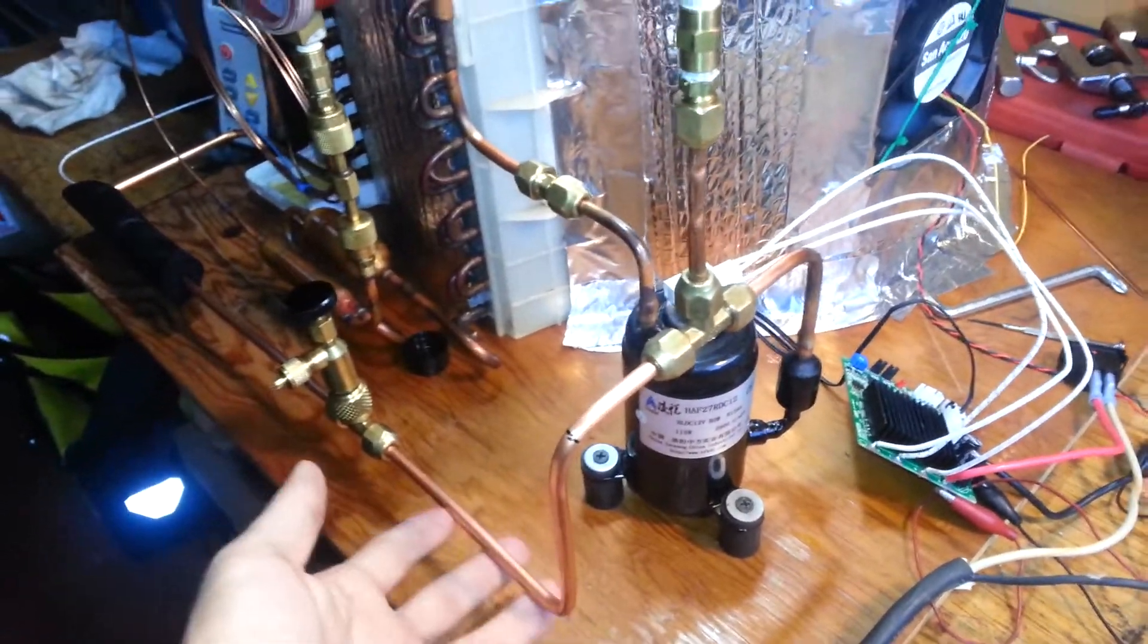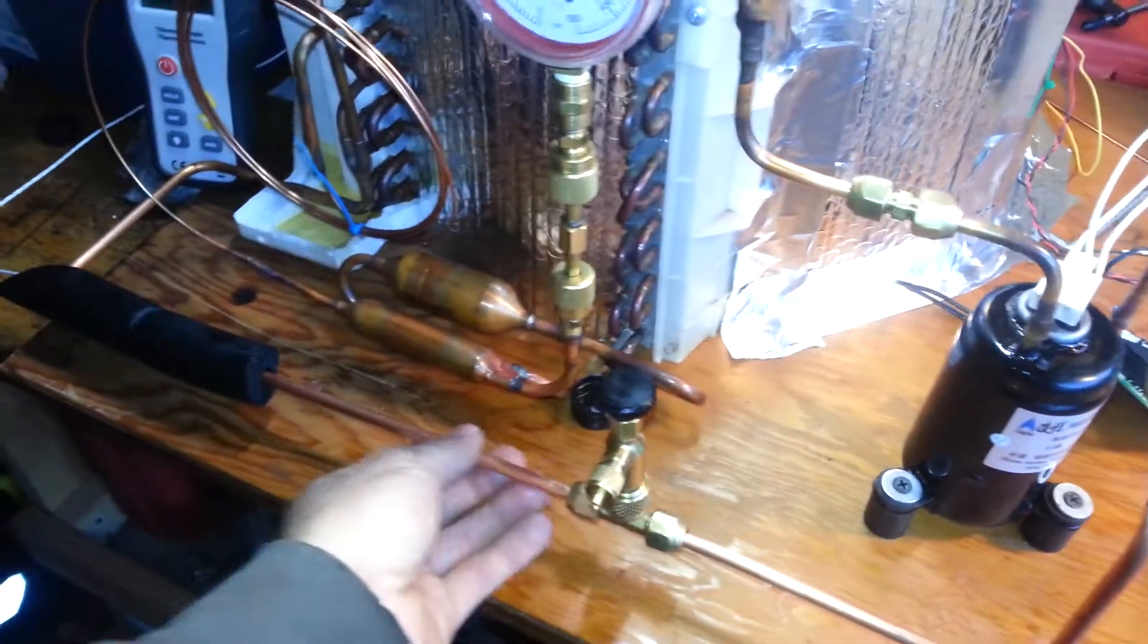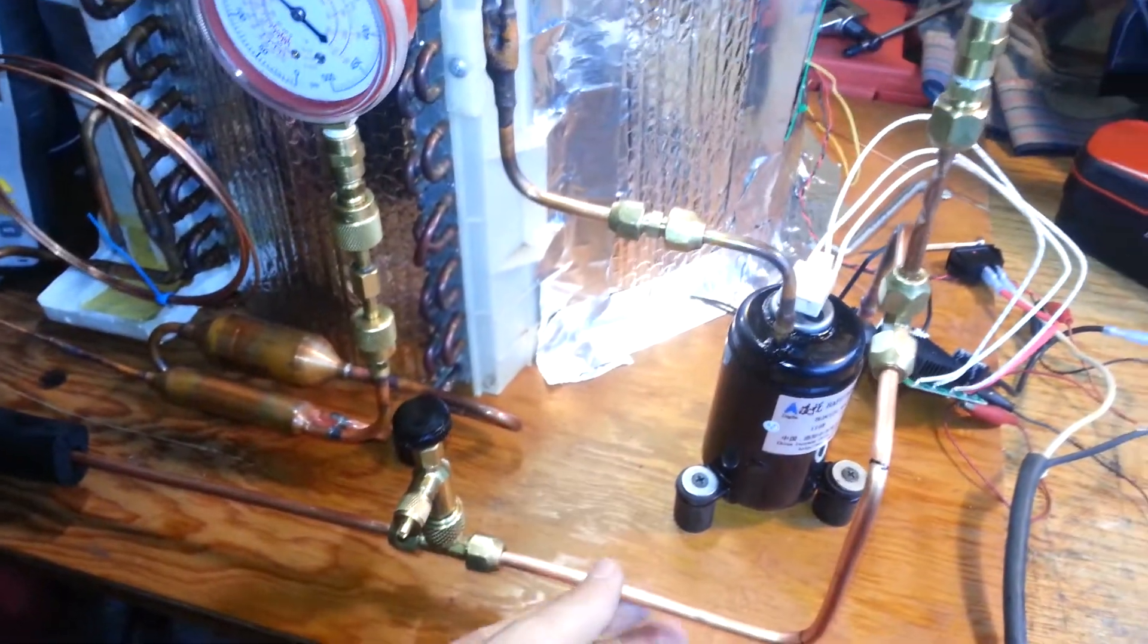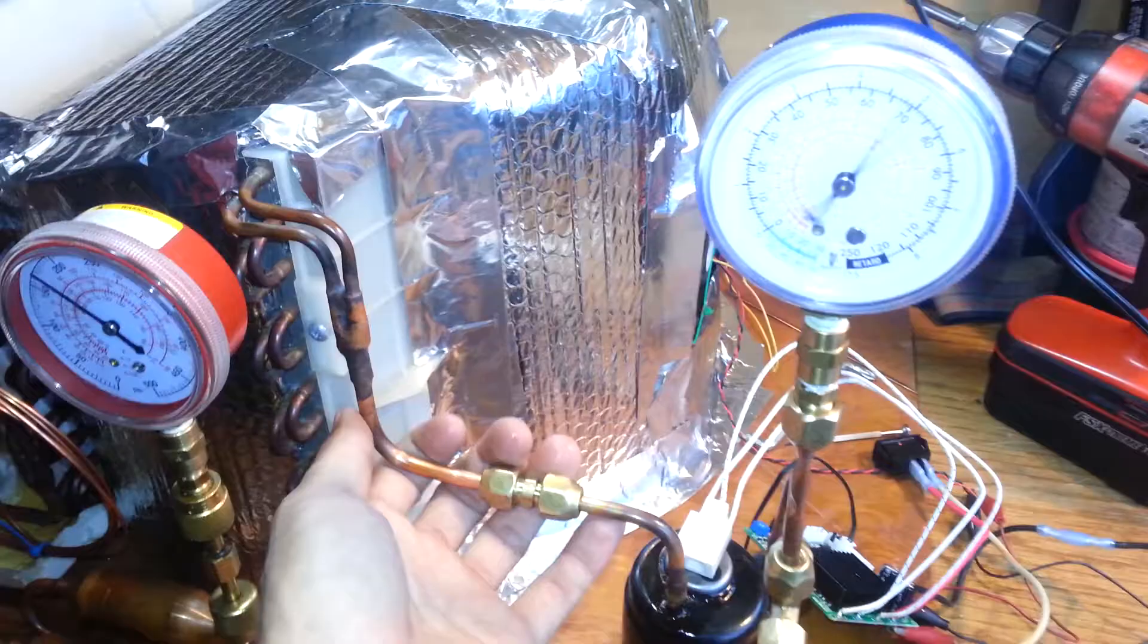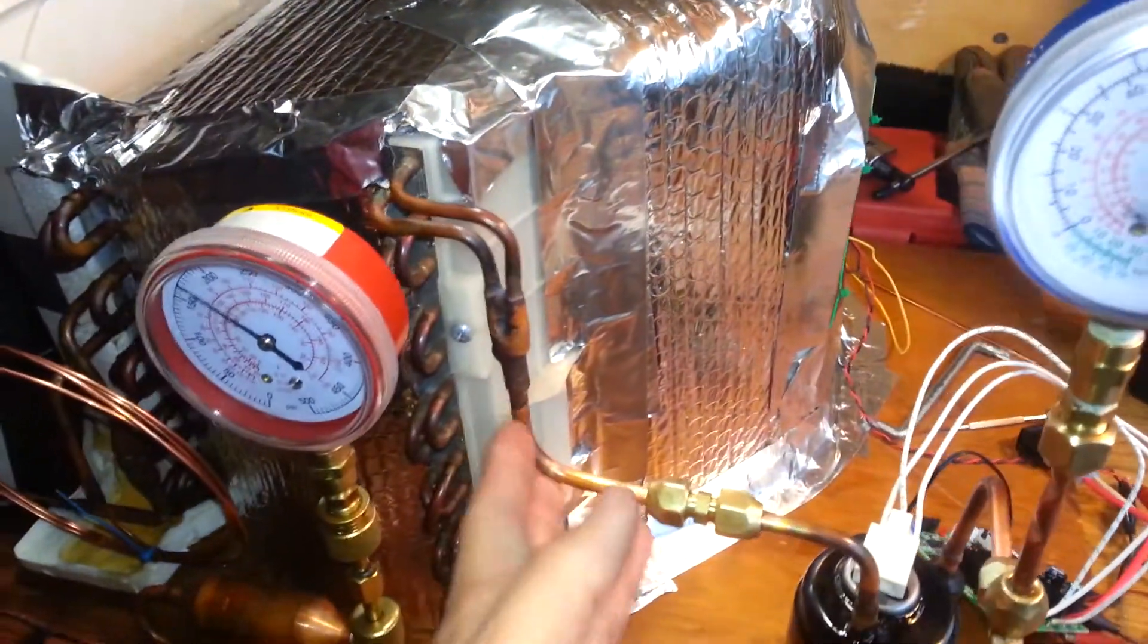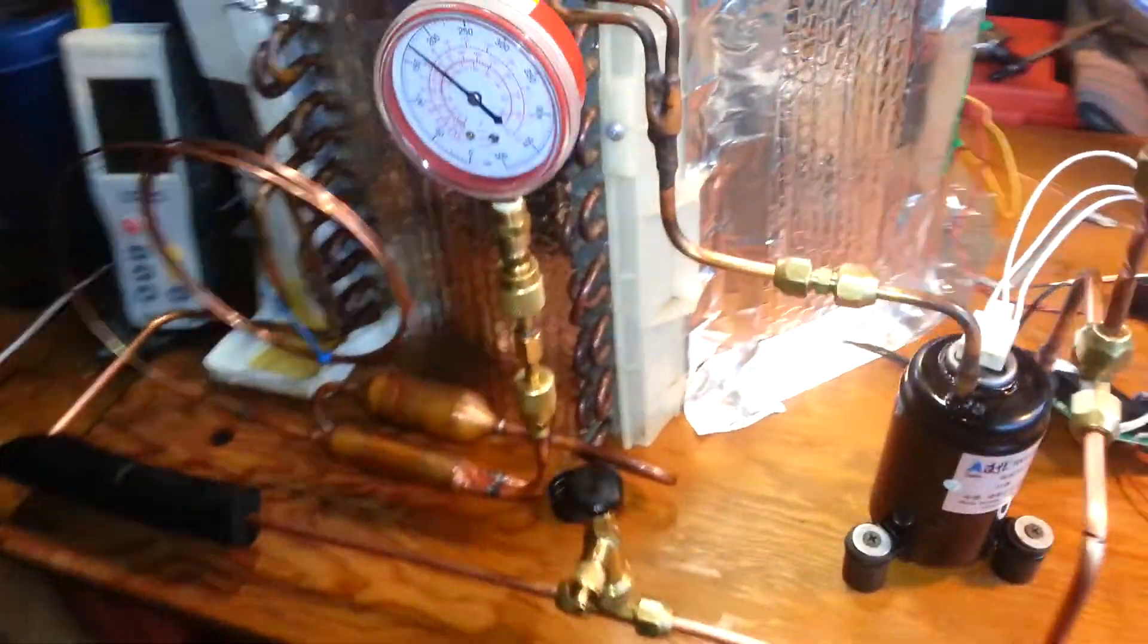The copper, like I said, is quarter-inch ACR tubing, so it's air conditioning and refrigeration grade. It's got a thicker wall than the utility-grade tubing. But utility-grade would work as well for these lower-end pressures.